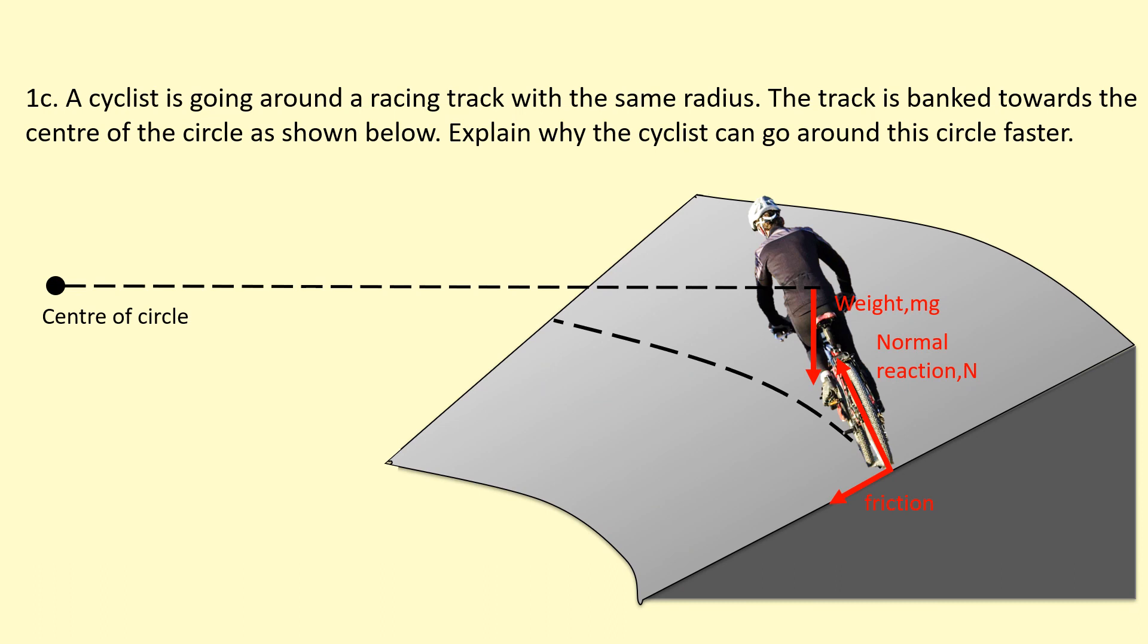However, the friction is not the most dominant factor anymore. So we're going to ignore the friction from now on. So what's going on? Obviously it's a horizontal circle. The weight is going to be balanced by a component of normal reaction force. The vertical component of normal reaction force is going to balance the weight mg there.